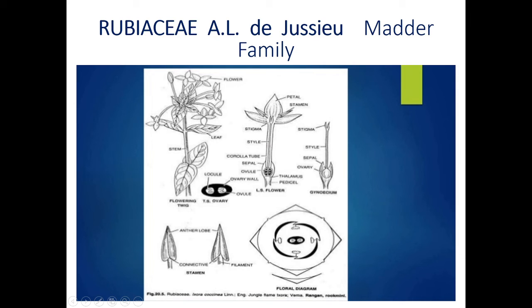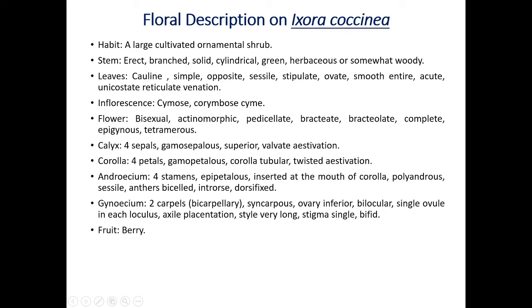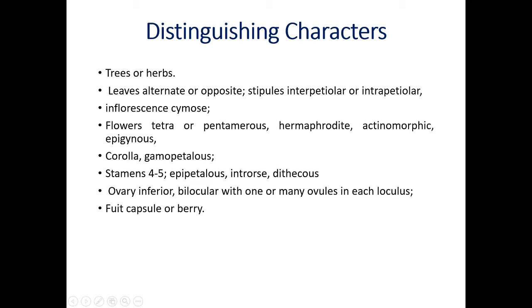This is the LS of flower of Ixora, showing the flowering twig with inflorescences — anthers and filaments are visible. Here is Ixora, which is similar to the family. Example Ixora coccinea — habit: large climbing ornamental plant. Stem erect, branched, solid, cylindrical, green, herbaceous, somewhat woody. Leaves simple, opposite, sessile, stipulate, smooth, entire, acute.